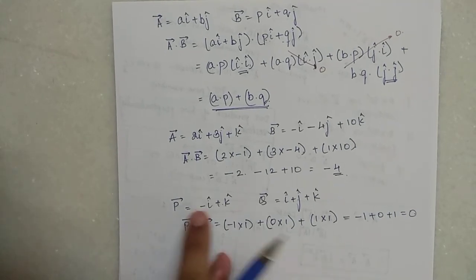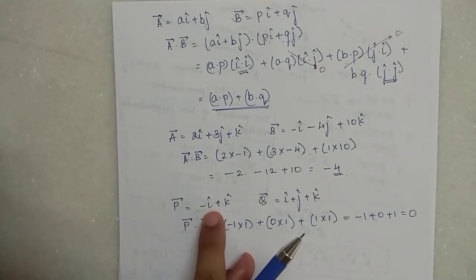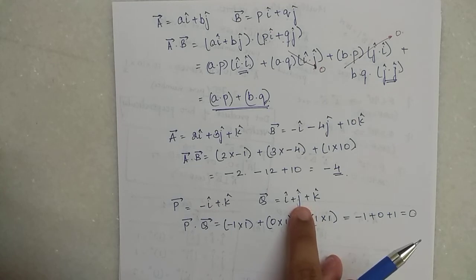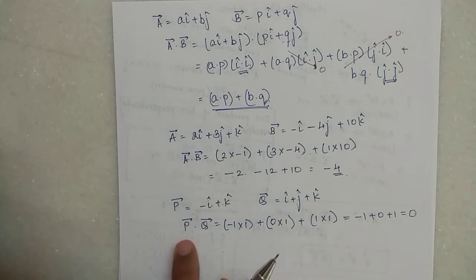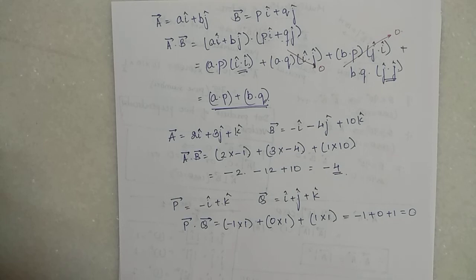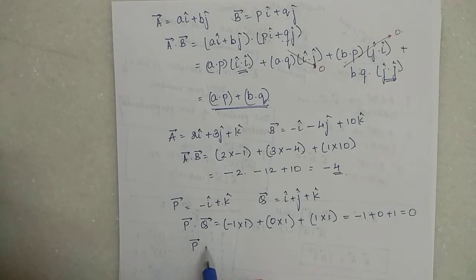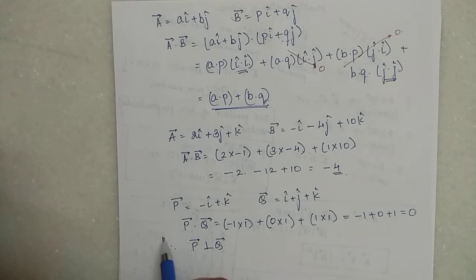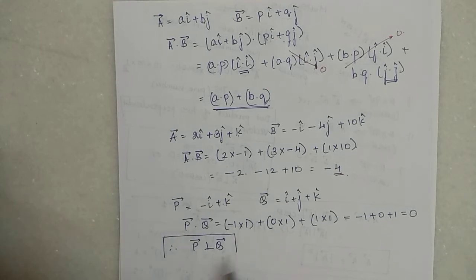Another example: vector P = −I + K and vector Q = I + J + K. To find P dot Q: I-coefficients: (−1) × 1 = −1; J-coefficient of P is 0, so 0 × 1 = 0; K-coefficients: 1 × 1 = 1. Total: −1 + 0 + 1 = 0. Since neither P nor Q is a null vector and the dot product is 0, the conclusion is that P is perpendicular to Q.